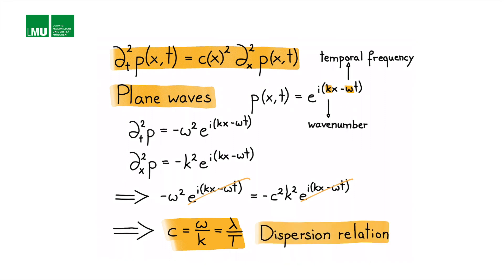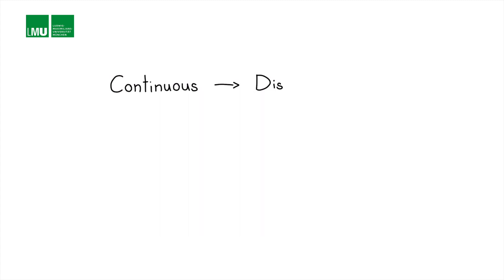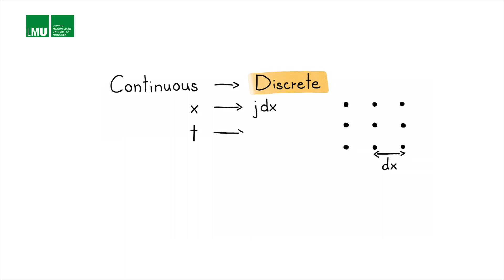That dispersion relation gives us the condition under which waves will propagate. But what happens in our discrete world with the finite difference approximation? Let's recall our discretization: x equals j times dx, where j is an integer and dx is the space increment; and time equals n times dt, where n is an integer and dt is the time increment.